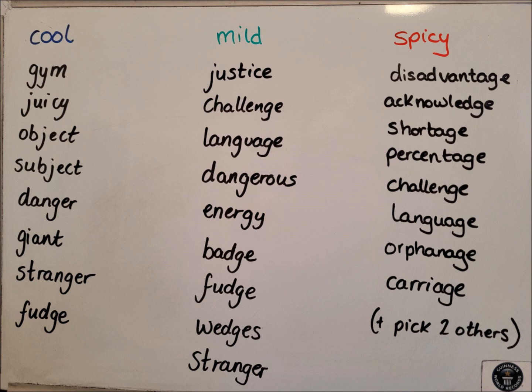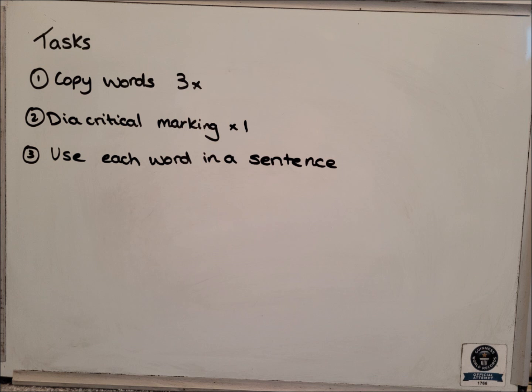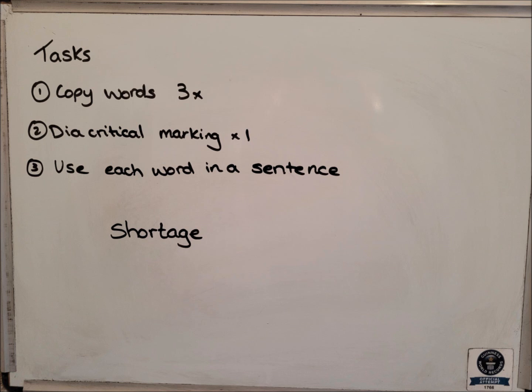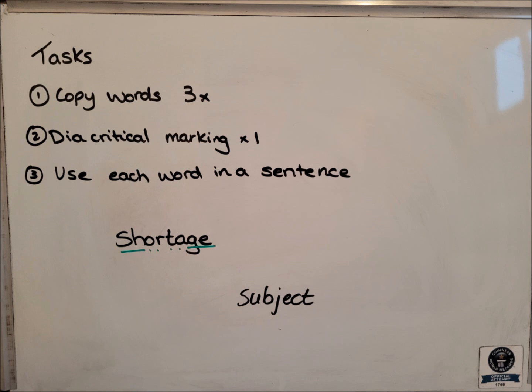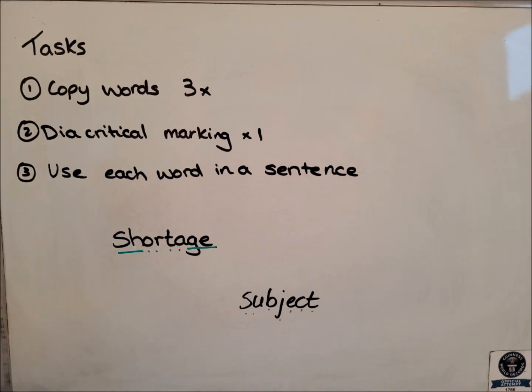Tasks for this morning guys: copy your words three times, diacritical marking once, and use each word in a sentence. Let's have a quick reminder of diacritical marking. If I had the word 'shortage', I'm thinking about the sounds in the word. SH at the start gets underlined because it is two letters making the SH sound. O, R, T, A are sounds on their own so they just get a dot. And then the J sound at the end gets a line underneath it. For 'subject', each of those different letters makes its own sound, so I am going to have a dot for each individual sound.